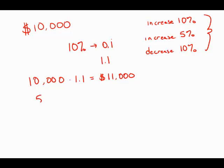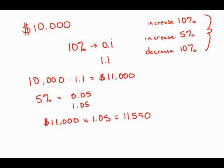Now, an increase of 5%. 5% as a decimal is 0.05. Add 1, and we get the multiplier, 1.05. 11,000 times 1.05, and this is 11,550. That's how much she had in her account during the second year.